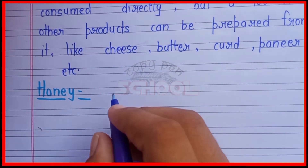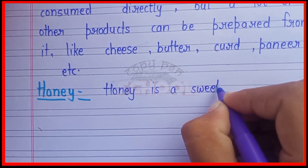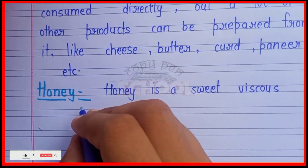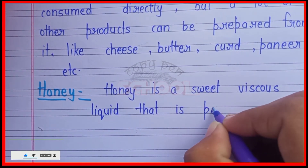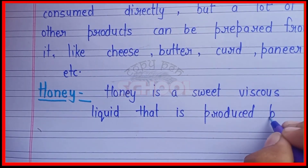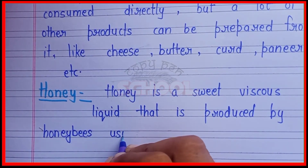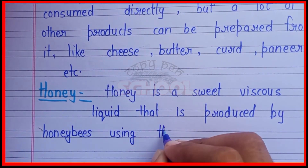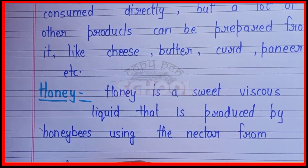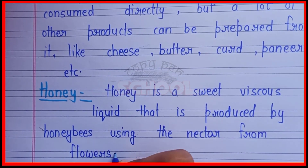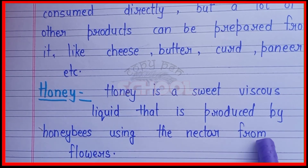Next, honey. Honey is a sweet liquid that is produced by honeybees using nectar from flowers.